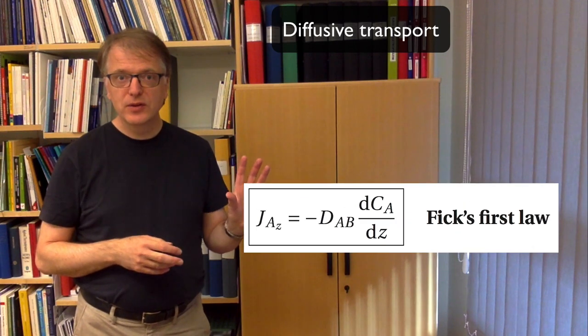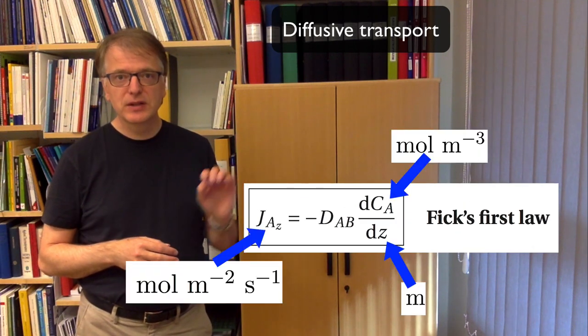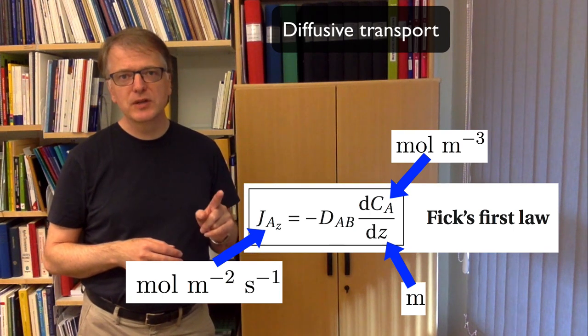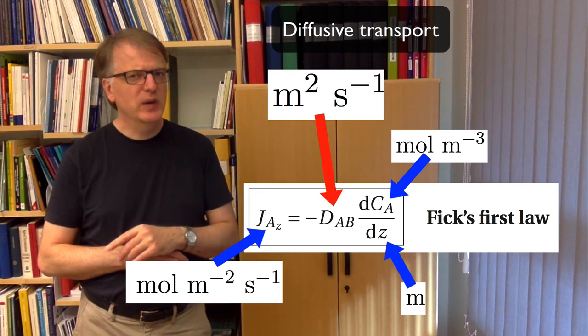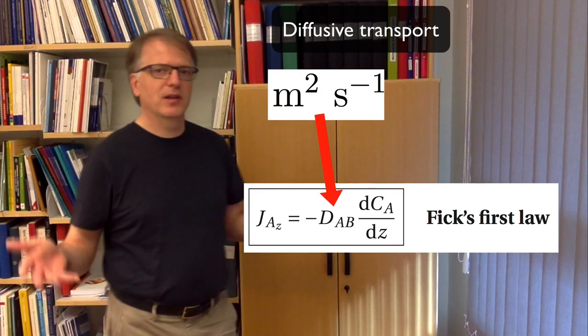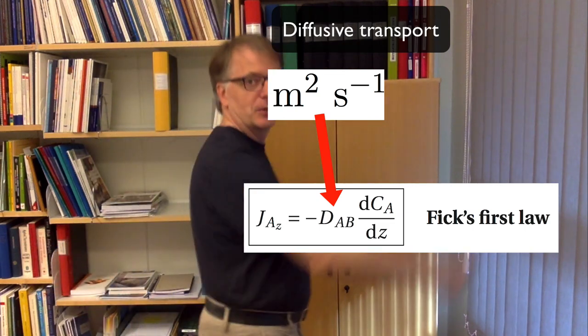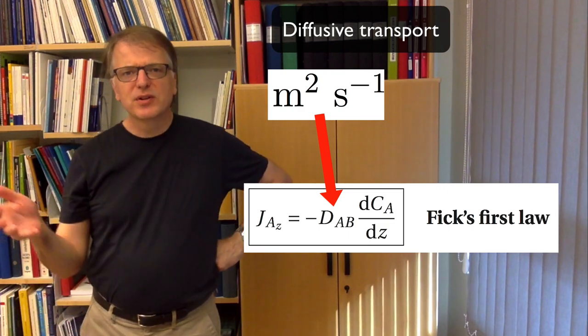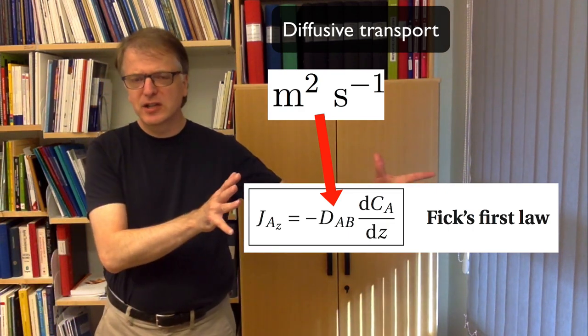But what is the unit of diffusivity? Well, if you look at the other units here, mole per square meter per second, mole per cubic meter and meter, that means that the diffusivity must have the unit square meter per second. But that sounds something like a painter, right? Trying to paint a wall and you paint a number of square meters per second. That sounds rather strange for something that is transported.